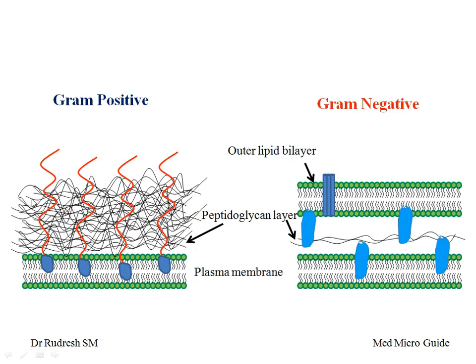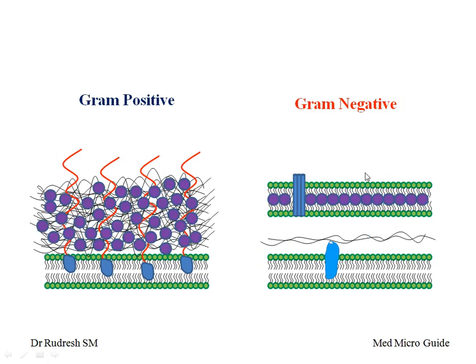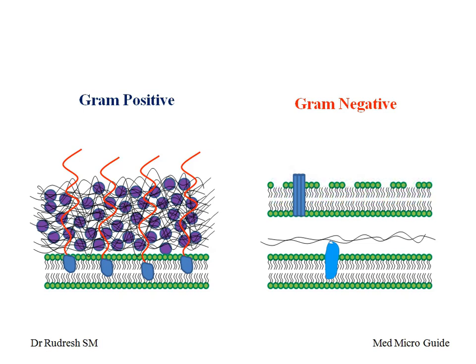Let's see the animation of the cell wall theory. The gram positive cell wall is made up of a thick layer of peptidoglycan interlinked by teichoic acid, whereas gram negative bacteria have a very thin layer of peptidoglycan and an outer lipid bilayer. When we apply the primary stain, the dye-iodine complex fixes to both gram positive and gram negative bacteria. In decolorization, the pore size of the gram positive peptidoglycan cell wall decreases, locking the dye-iodine complex, while in gram negative bacteria the lipid bilayer dissolves, leaking the complex and making the cell colorless.